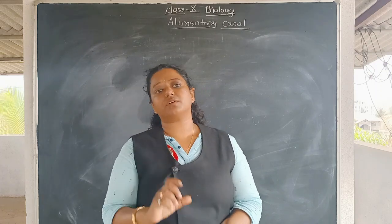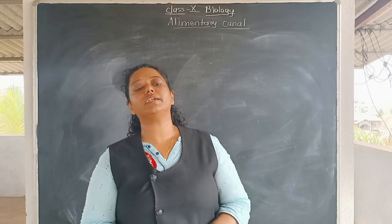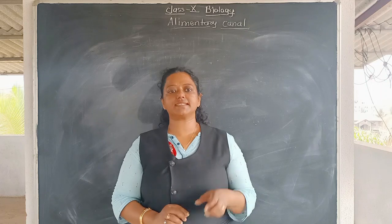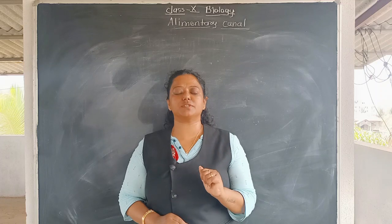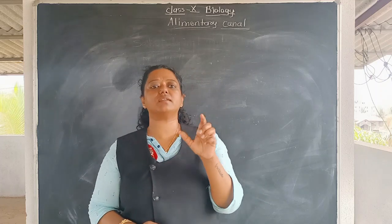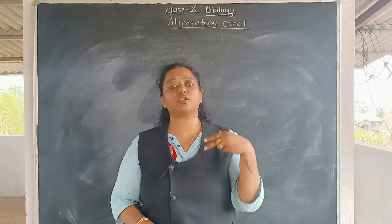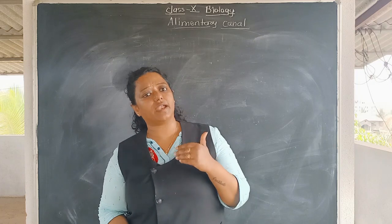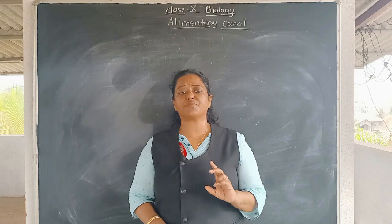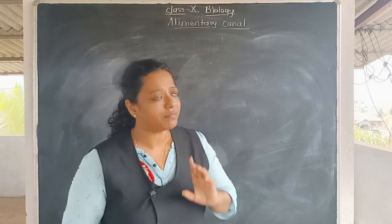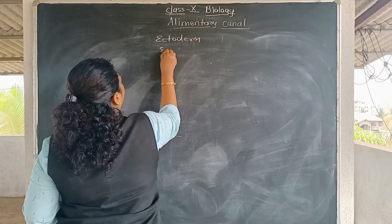We will discuss detailed information of every part of the alimentary canal. The alimentary canal is actually a tubular structure — a tube-like structure, also called the food pipe or gut system. This alimentary canal is originated from two parts: ectoderm and endoderm. Ectoderm and endoderm are the two embryonic layers from which the alimentary canal develops.